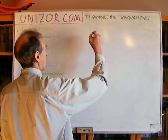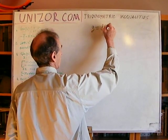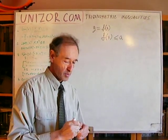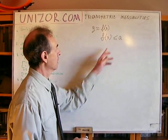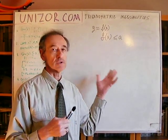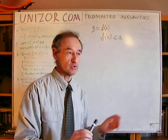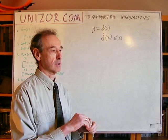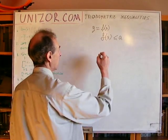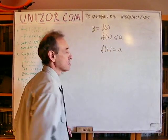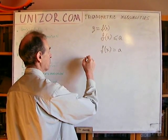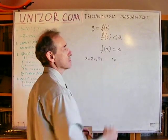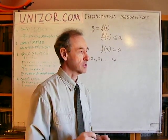Let's say you have some function and you would like to solve an inequality of this type. We are talking about a real function, real arguments, and a real constant A. How can this particular inequality in general be approached? There are n solutions to this particular equation.